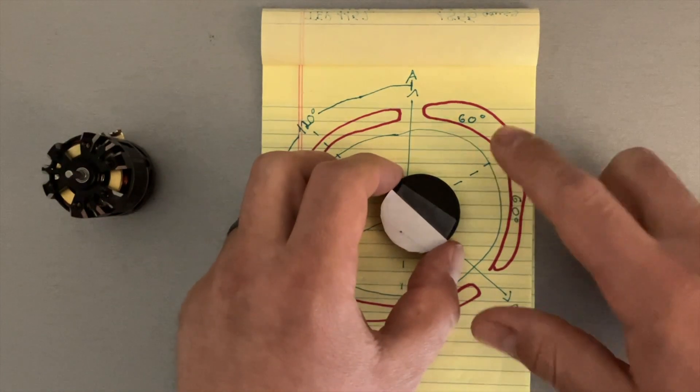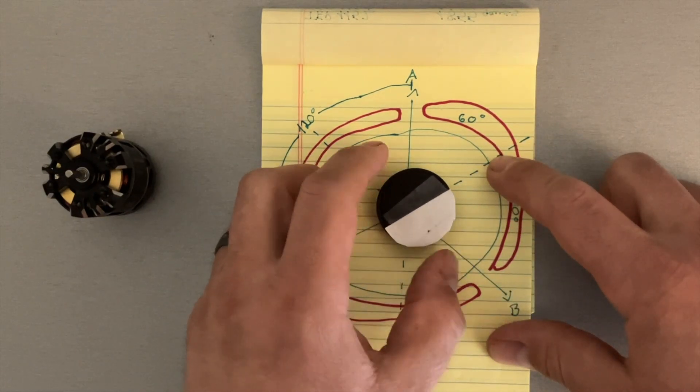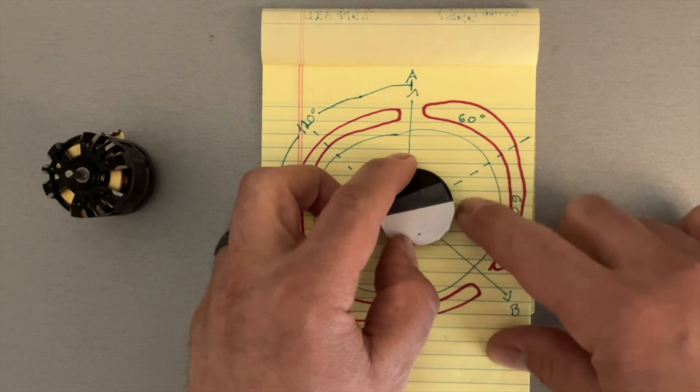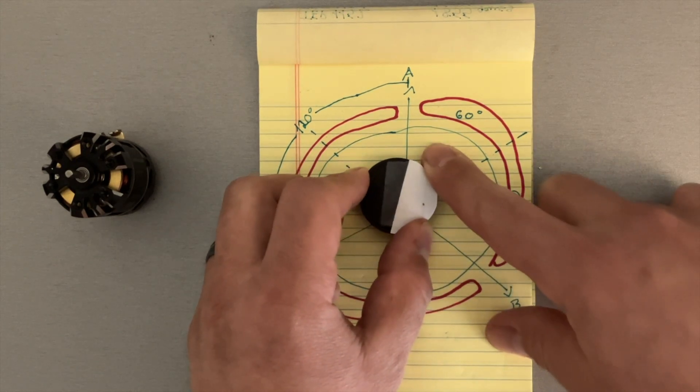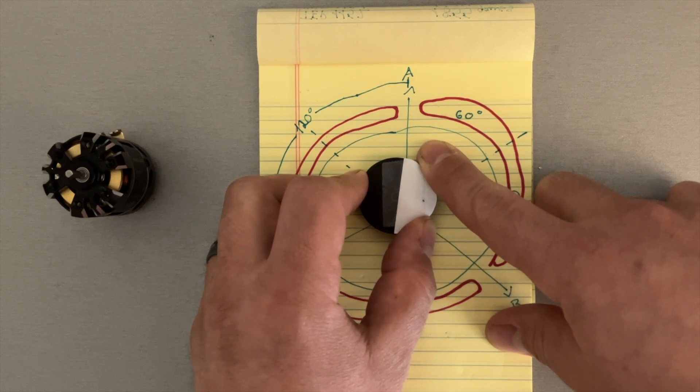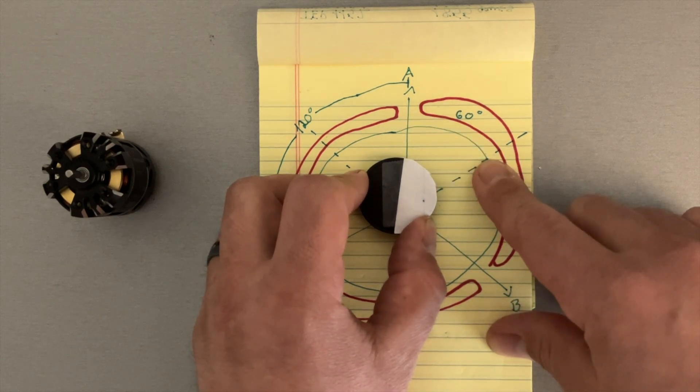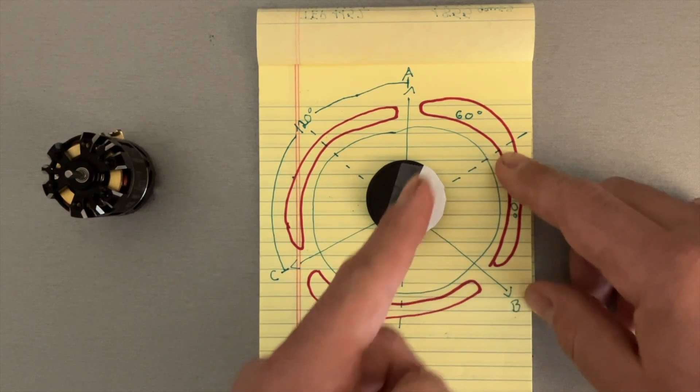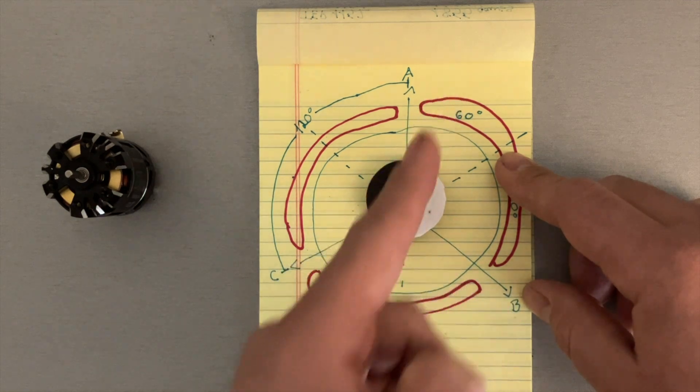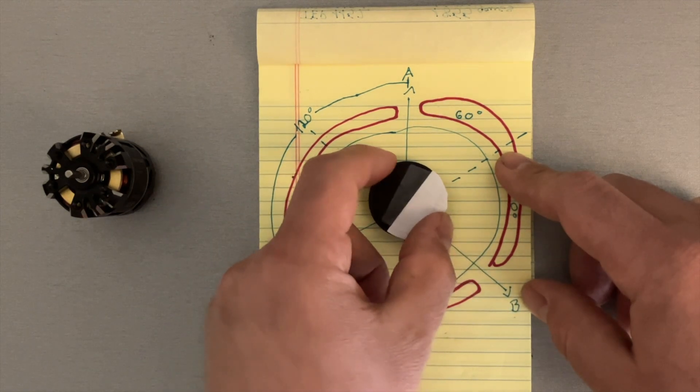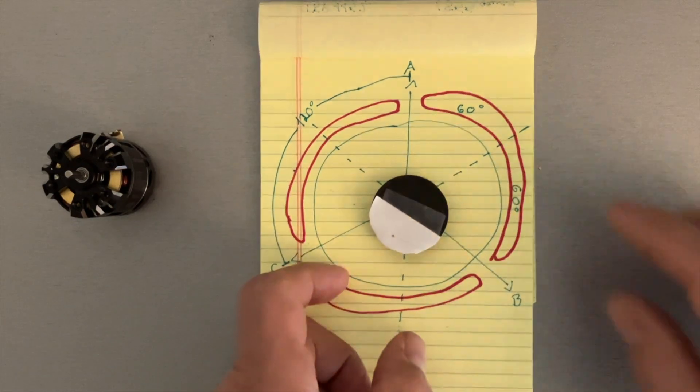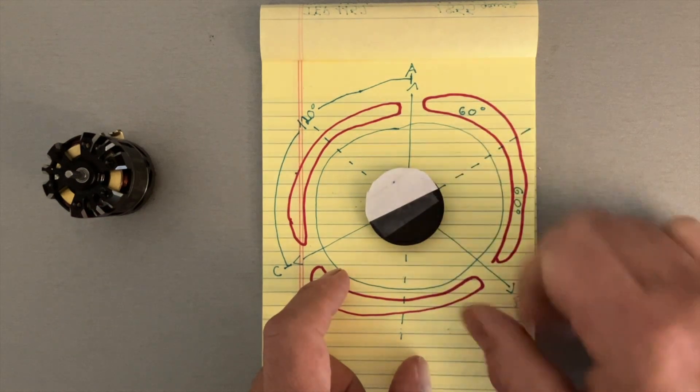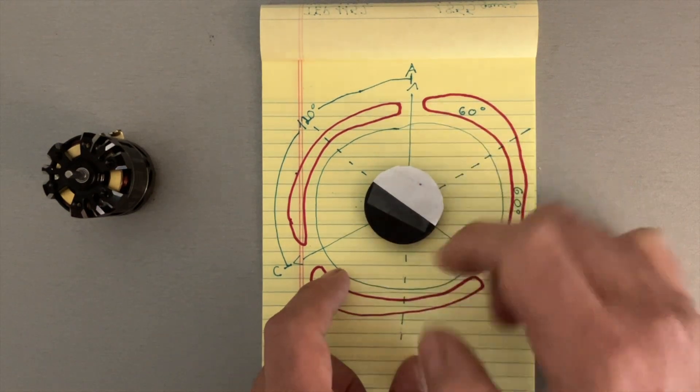The problem is when you go beyond 60, so let's just say you go over here, the timing, this is going to, once you fire, it's going to start wanting to spin backwards. So that's the problem with it. That's why you never want to exceed 60 degrees of timing. Because if your timing is off, let's just say, so if you look at this, so notice where this is at. Once it fires off, this is going to want to attract this to the next one, and then the next one. All right, the next one, the next one, so on and so forth.